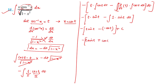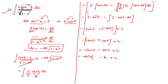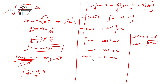Putting values back: t = cos⁻¹x, sint = √(1−x²) (since cost = x implies sint = √(1−x²)), cost = x. The final answer is −cos⁻¹x · √(1−x²) − x + C, or equivalently −√(1−x²)·cos⁻¹x − x + C.